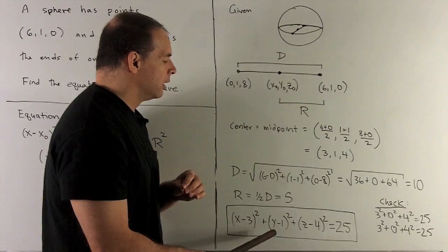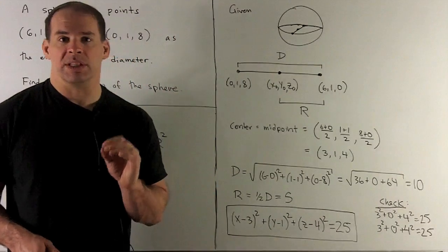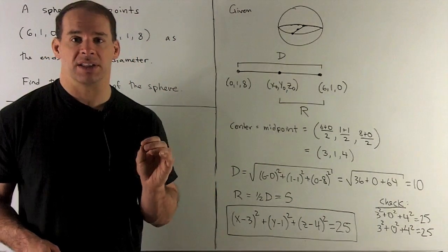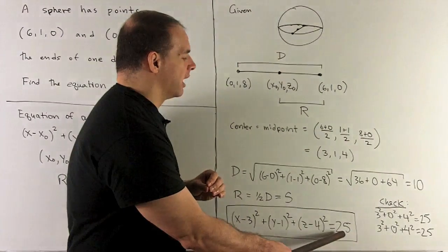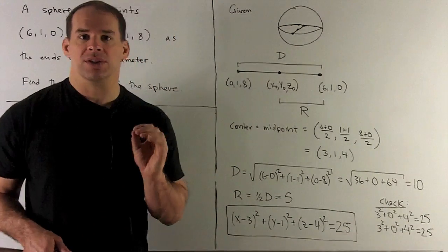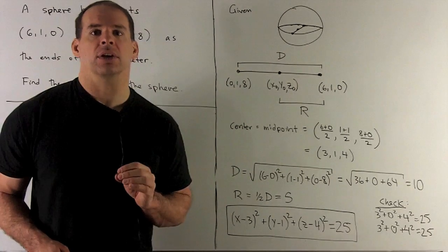1 goes in here, we get 0. Put 0 in here, I take -4 and square it, that gives me 16. So I have 9 + 16, that's 25, and that agrees with what's on the right-hand side. So (6, 1, 0) is definitely a point. We check the other one, but I'll leave that to you.